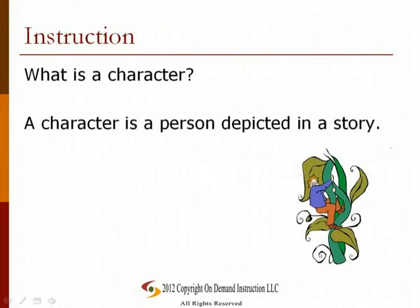A character is a person depicted in a story. For example, Jack from Jack and the Beanstalk is a character in that story, and the giant is also a character. There are many different types of characters. Jack is a major character, as he is the most important person in the story because the story is about him, whereas his cow that he trades for the magic beans is a minor character.